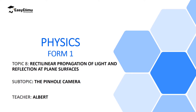Welcome to ECLIMU Learning Simplified. In this lesson we are going to discuss one of the proofs that light travels in a straight line, and that is the pinhole camera. We are going to discuss how we can form a simple pinhole camera and how we can use it to prove that light travels in a straight line. The formation of images inside a pinhole camera in an upside down position is going to help us prove that light travels in a straight line. My name is Albert, I hope you will enjoy the lesson.